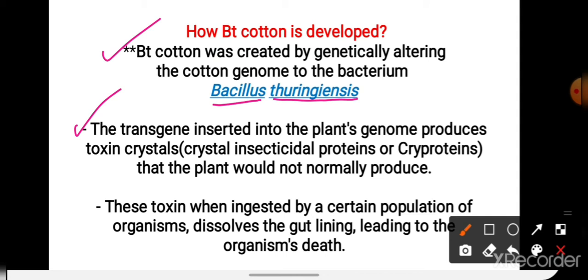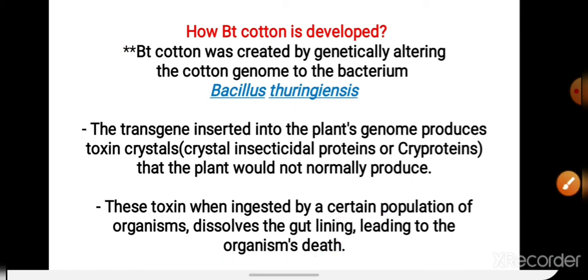और ऐसे plant के उपर अगर कोई particular insect आता है, तो वो उस plant को खाते ही मर जाएगा. So, these toxins, when ingested by a certain population of organisms, dissolve the gut lining leading to the organism's death. तो वो वहाँ पे मर जाएगा.